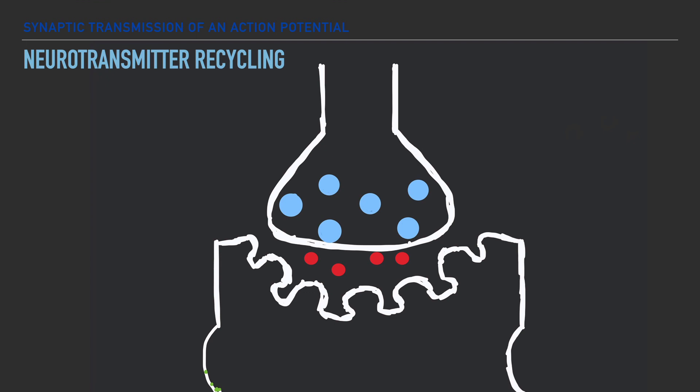Back in the synaptic cleft, where we had the release of specialized neurotransmitters, it's important to note that some of these will be transported back into the synaptic vesicles, some will be broken down, and others will diffuse or move out of the synaptic cleft and be recycled for a later or different use.